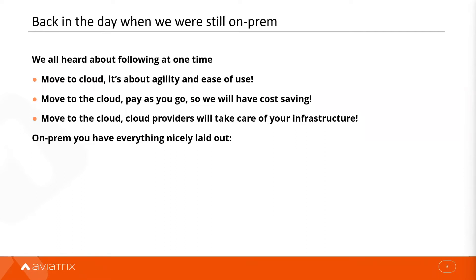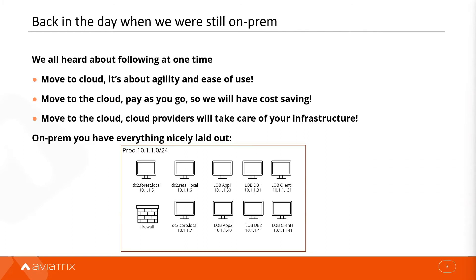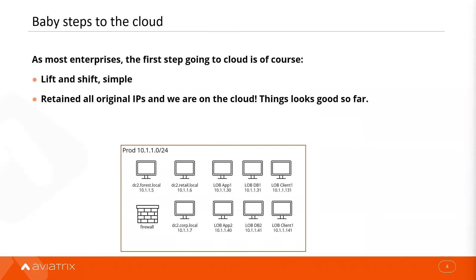For most enterprise customers, this customer has everything on-prem with multiple domain controllers and multiple domains, CRT servers, app servers, and databases. We've always been talking about multi-cloud and how it's about agility and easy to use. When you go to the cloud, you can use a pay-as-you-go model, which should automatically translate to cost savings. The cloud provider will actually take care of the infrastructure. On-prem, you have everything nicely laid out — domain controllers, app servers, database servers, clients, and a firewall. Now we want to go to the cloud, so most enterprises would take a baby step and do a lift and shift. Just do a backup, restore, synchronization from on-premise over to the cloud, cut it over, retain the original IP addresses — and we're on the cloud.